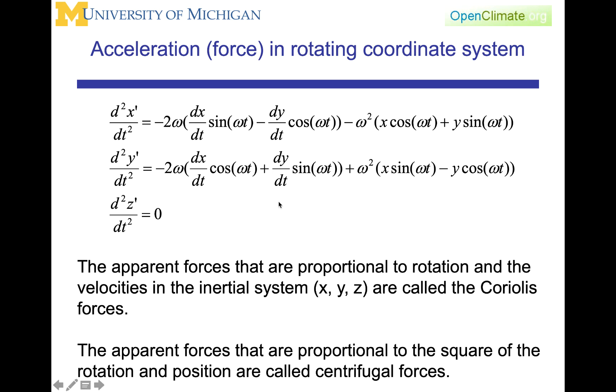These apparent forces due to coordinate systems, we tend to identify as two types. This one, ω² times the position, will be identified as the centrifugal force. And this one, which will be ω times essentially a velocity, will be identified as the Coriolis force.